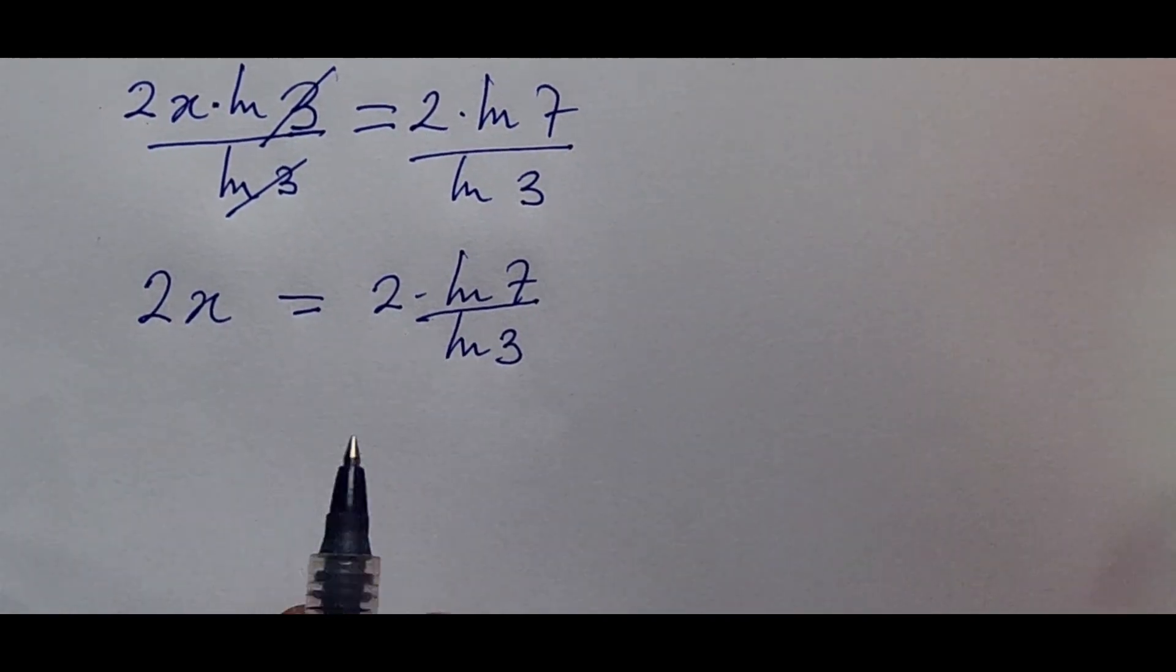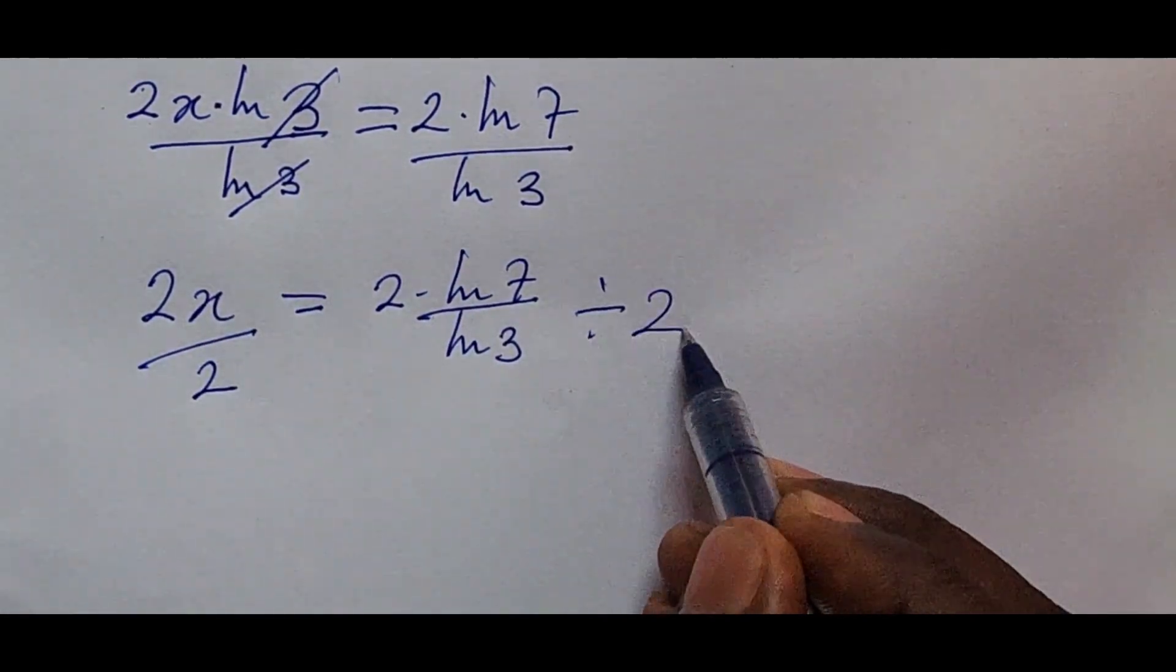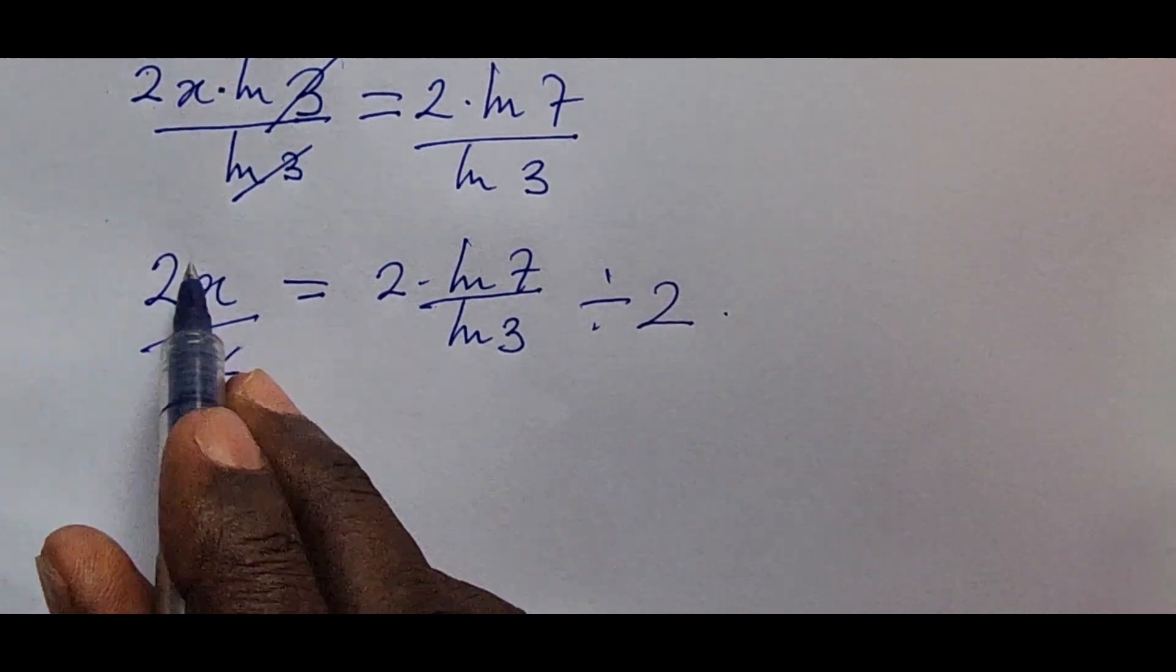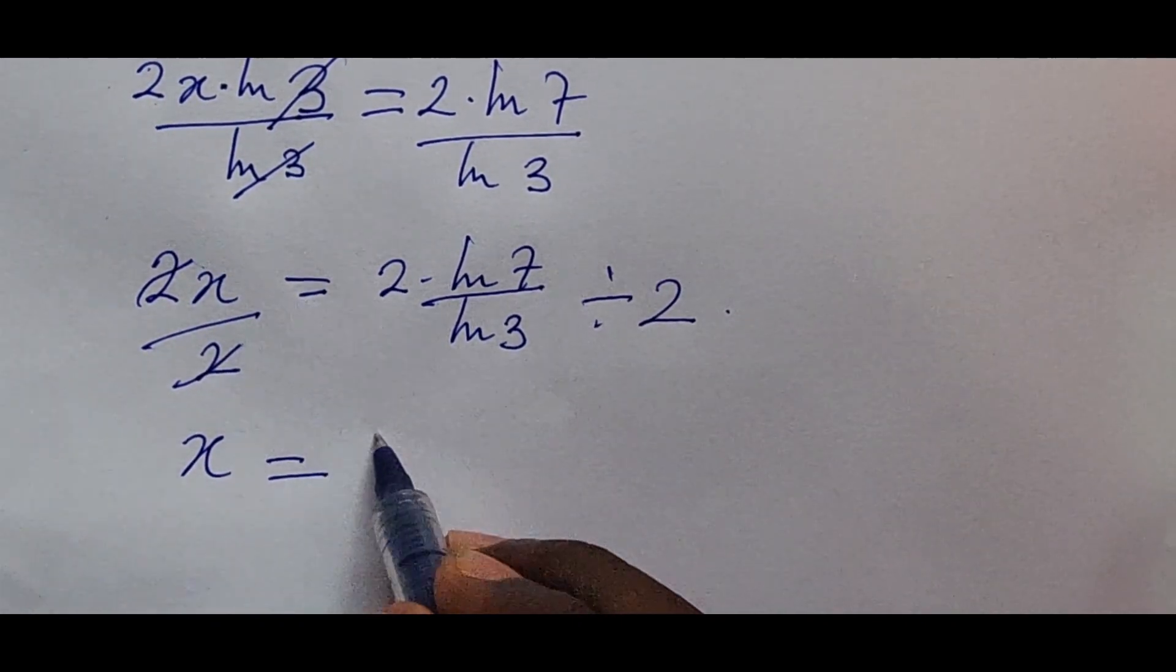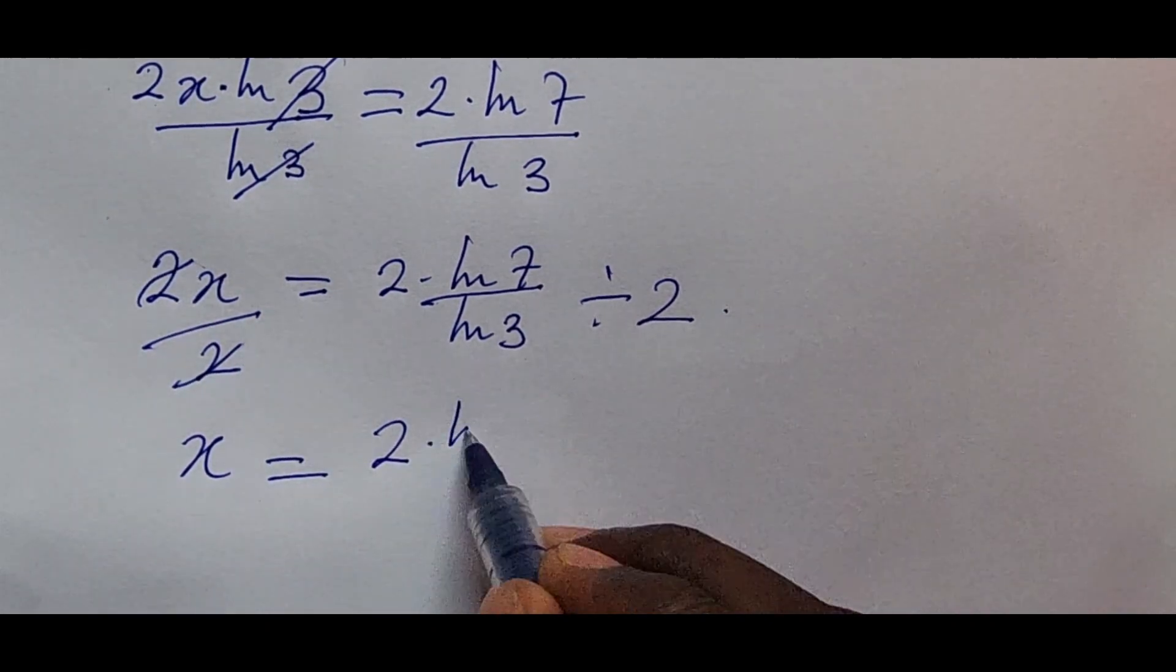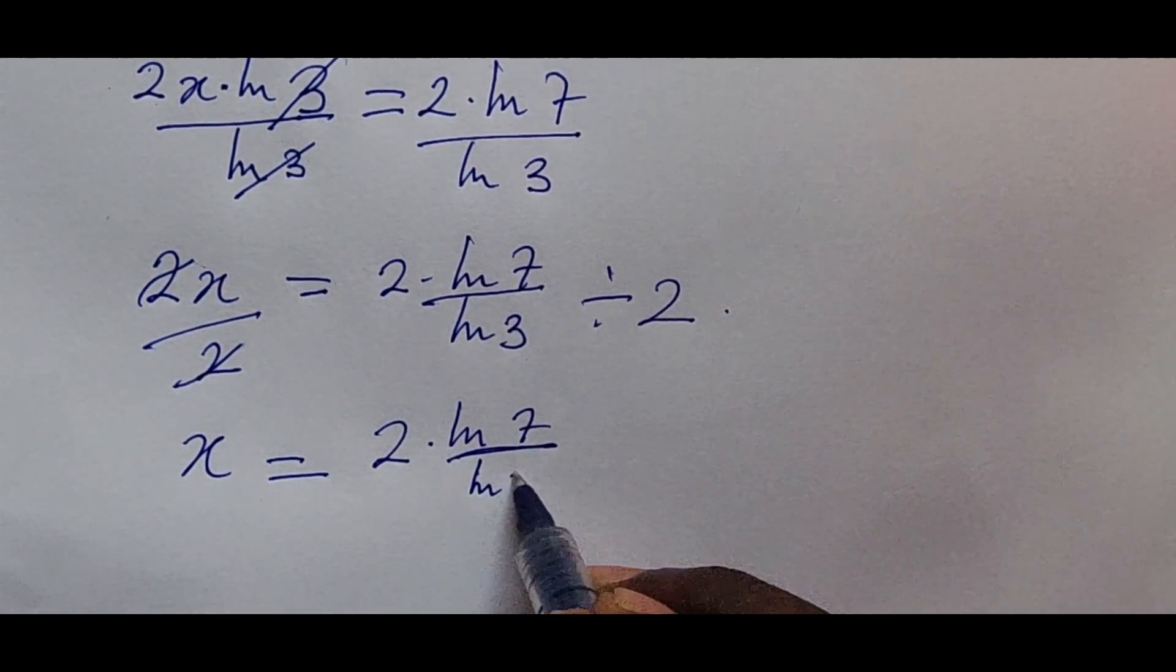Again, we divide through by 2 because we are looking for x. So we divide this by 2 also. And so we have x is equal to 2 times the ln of 7 all over the ln of 3.